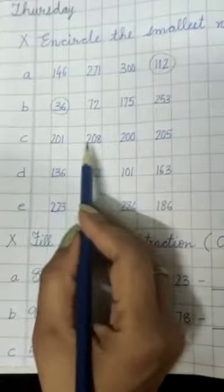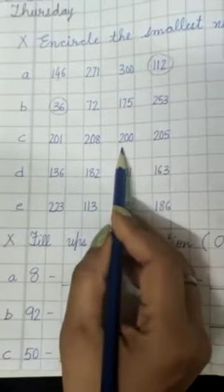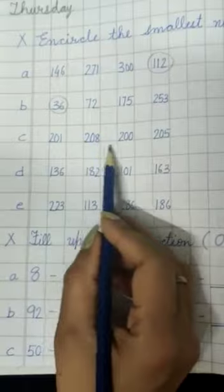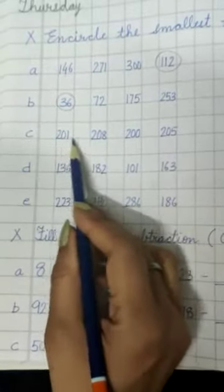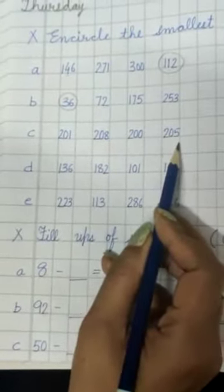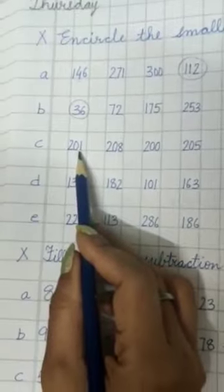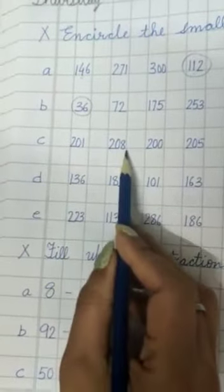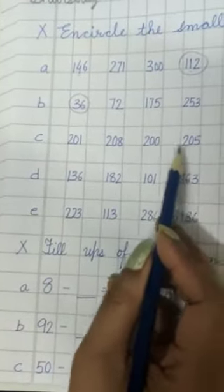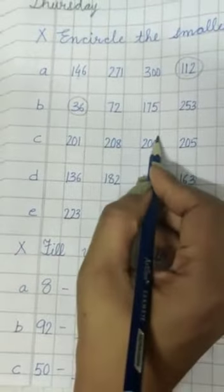201, 208, 200, and 205. The first digit in all the numbers is the same. The second digit in all the numbers is the same. So we are going to check the third digit: 1, 8, 0, 5. So this is the smallest number.